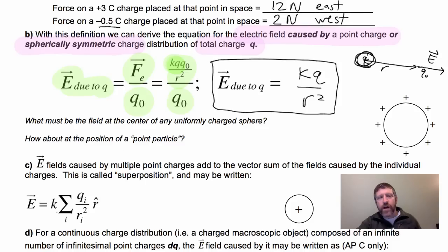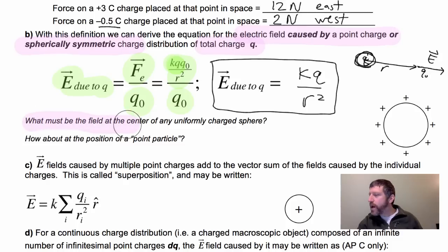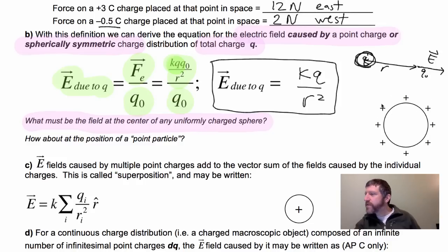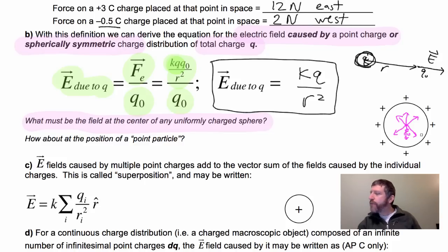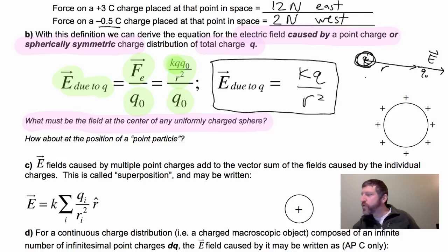Now, it's very important to understand: what must be the field at the center of a uniformly charged sphere? If you put a test charge Q₀ right at the center, the charges on one side push it one way, and the charges on the other side push it the opposite way. When you add up all these forces, the net force on the test charge is zero. In fact, everywhere within the substance of a conductor, the electric field strength is zero.